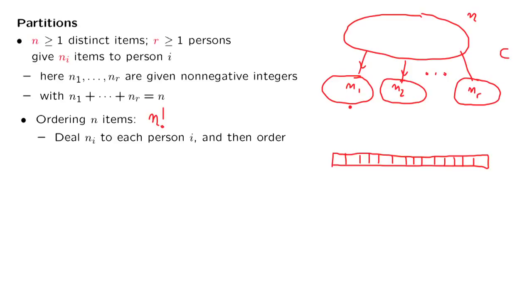Having done that, then we ask person 1 to take their items, order them, and put them in the first n1 slots of our list. Then person 2 takes their items and puts them in the next n2 slots in our list. We continue this way. And finally, the last person takes the items that they possess and puts them in the last n_r slots in this list.